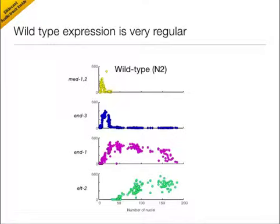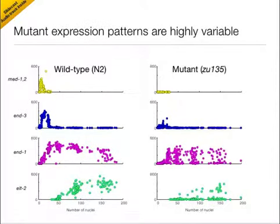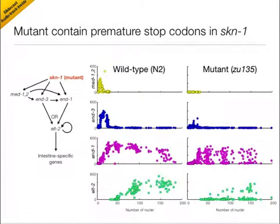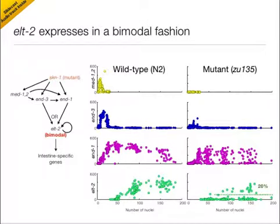In the wild-type, we found that the expression of MED1 and MED2, END-3, and END-1 proceeded in coordinated waves, with ELT-2 being robustly activated after the 50-cell stage. In contrast, gene expression in the SKN-1 mutants is highly variable. The mutations we are interested in are premature stop codons in the gene SKN-1. The next thing to notice is that the expression of ELT-2 is bimodal — this is the incomplete penetrance of the mutant phenotype.